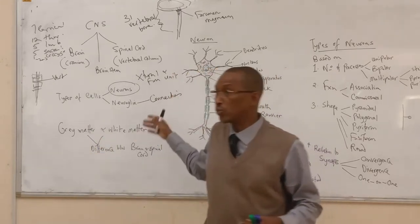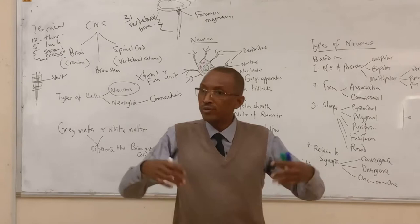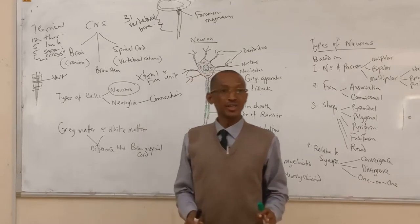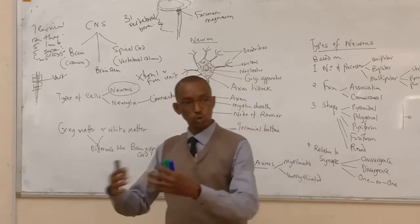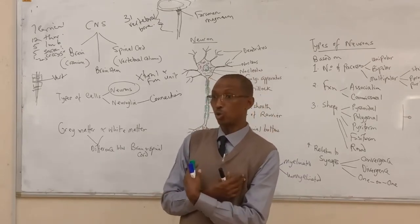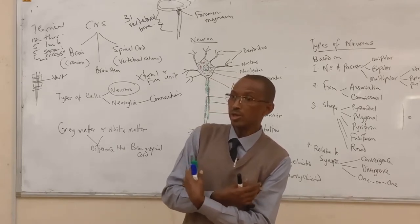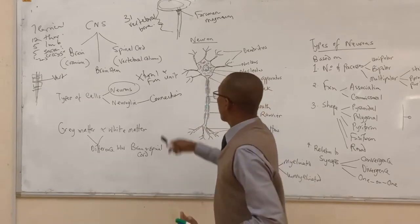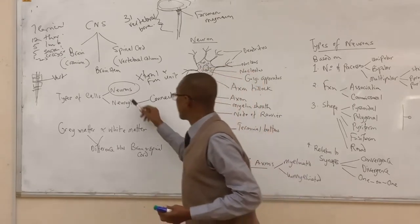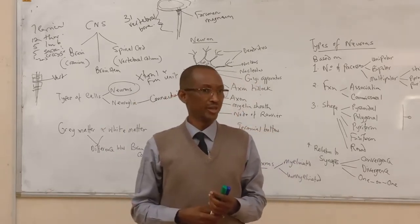The support that neuroglial cells give to neurons includes providing them with nutrition and nutrients so they can perform their functions. Apart from nutrition, neuroglial cells also bring neurons together and bind them — just like a good mother brings her children together. So the neuroglial cells both nourish and bind the neurons within the nervous system.